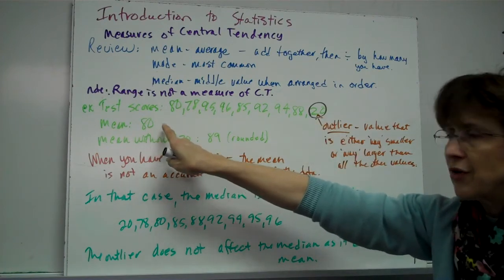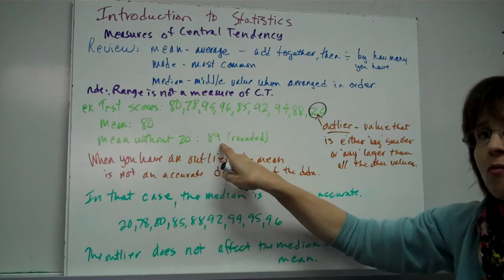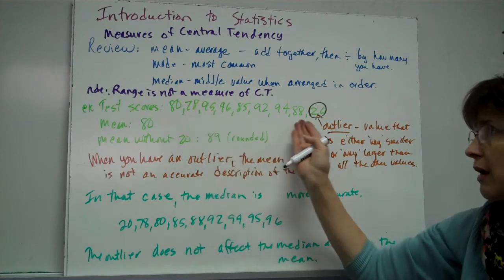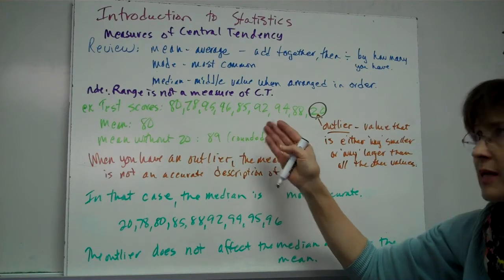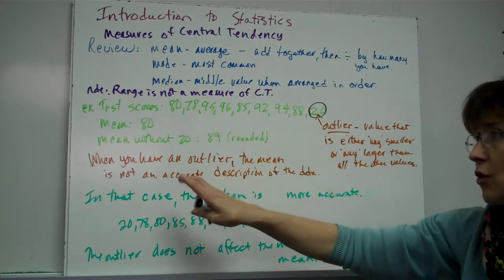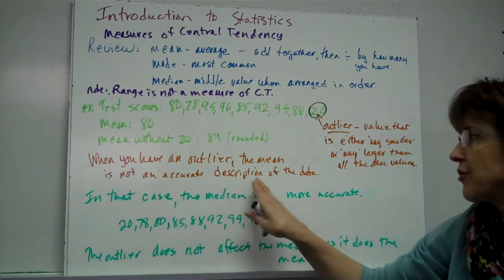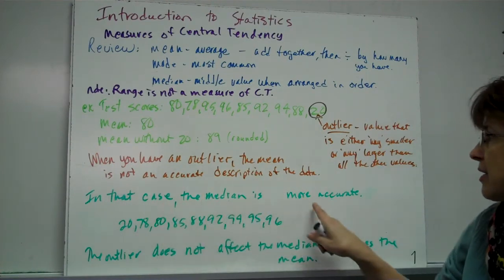If you take the mean with the outlier, you get 80. If you take the mean without the outlier, you get 89. So you ask yourself, which one is the more accurate description of how this particular class did on the test? Well, 89 is because they all made around 89, except for this guy. So when you have an outlier, the mean is not an accurate description of the data, but the median is. In this case, the median is more accurate.